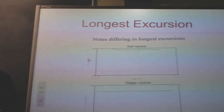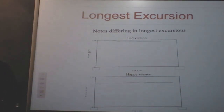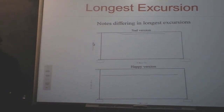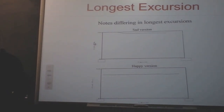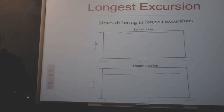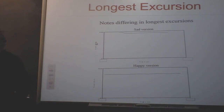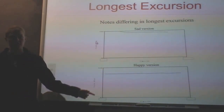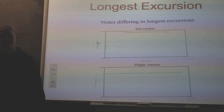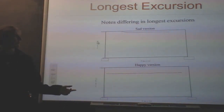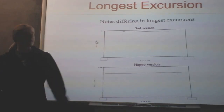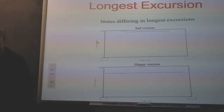The longest excursion is a little bit difficult to explain, but with all the frequencies in each different note, the longest excursion is basically measuring the amount of time that it took to change frequencies. For the happy, the pitch was pretty steady, but for the sad it goes down — it took some time to change the pitch.